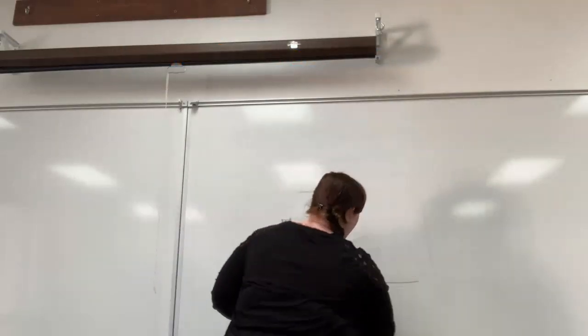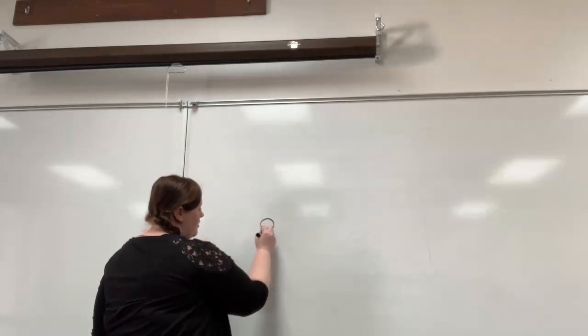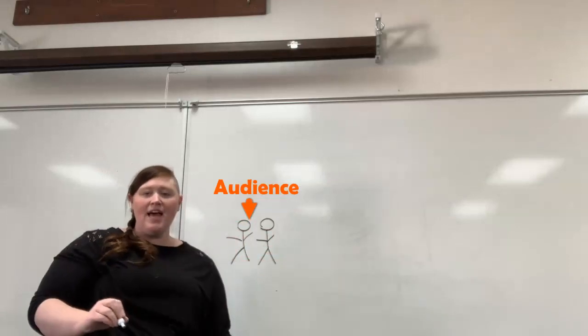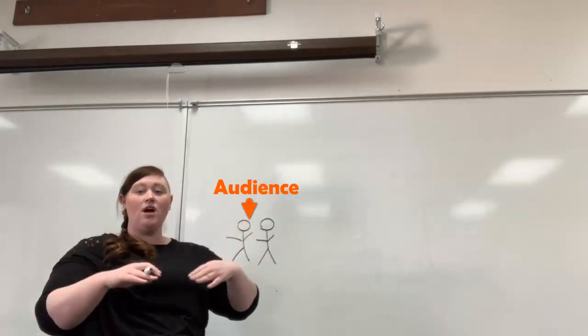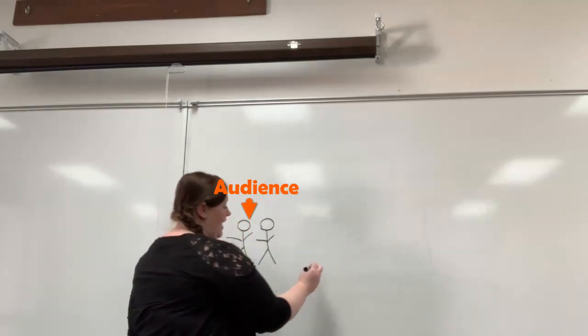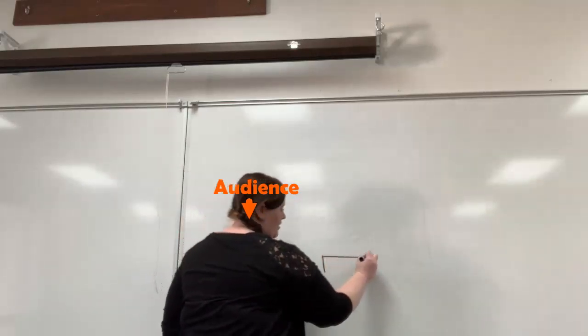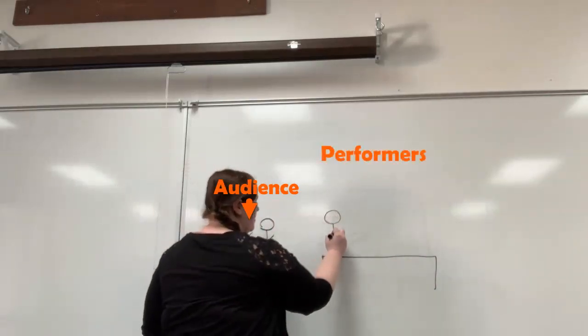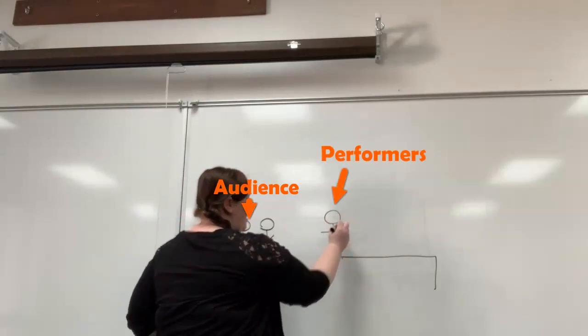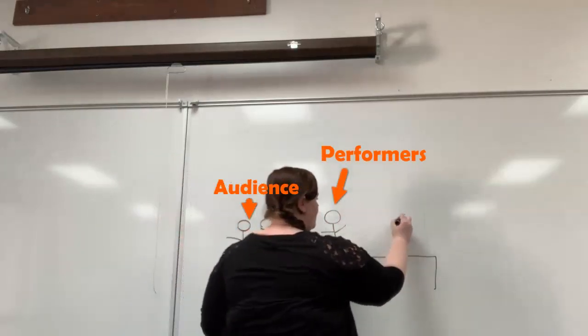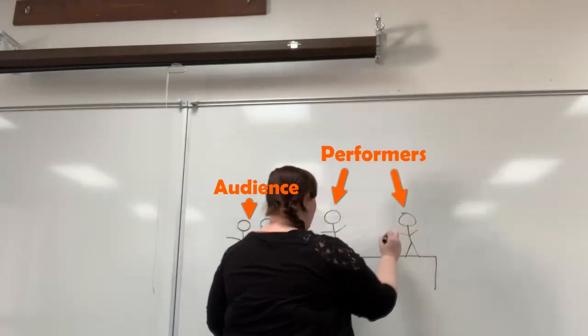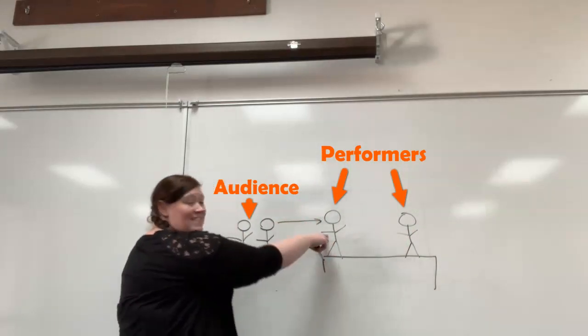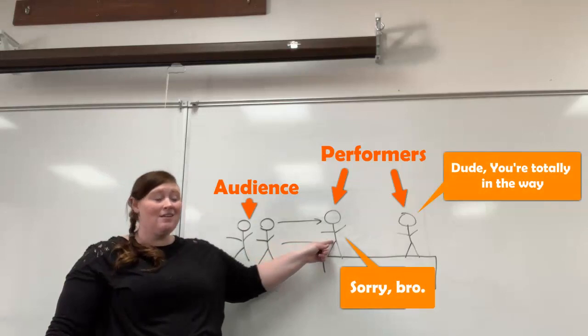So you have the audience, and if they're watching a play on a stage that is flat - here's a flat stage - if someone is towards the audience and someone is further back on the stage performing, the audience can't really see this person because this person is in the way.